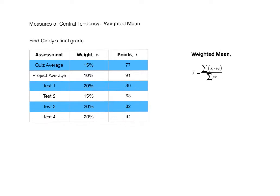Now I want to go through the computation to figure out what grade Cindy should be assigned as her final grade. The weighted mean is computed according to this formula: x-bar, which represents our mean or sample mean, is equal to the sum of the x times w's. The x times w's are the amount of points scored x times the weight in decimal form — so 15% is 0.15, 10% is 0.1, 20% is 0.2, and so on.